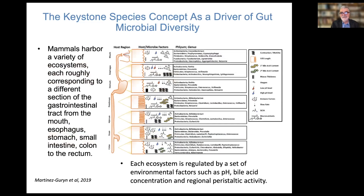In the gut there are different ecosystems. If you go geographically from the mouth all the way down to the end of the colon, you can see different microbes are present, including different keystone species important for each of those ecosystems. Regional differences in the exposome shape these microbial communities.